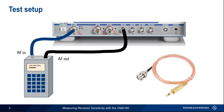Once the radio is connected, it should be tuned to the desired frequency, and the audio output should be set to approximately mid-range. Any squelch, automatic gain control, etc., should usually be disabled.